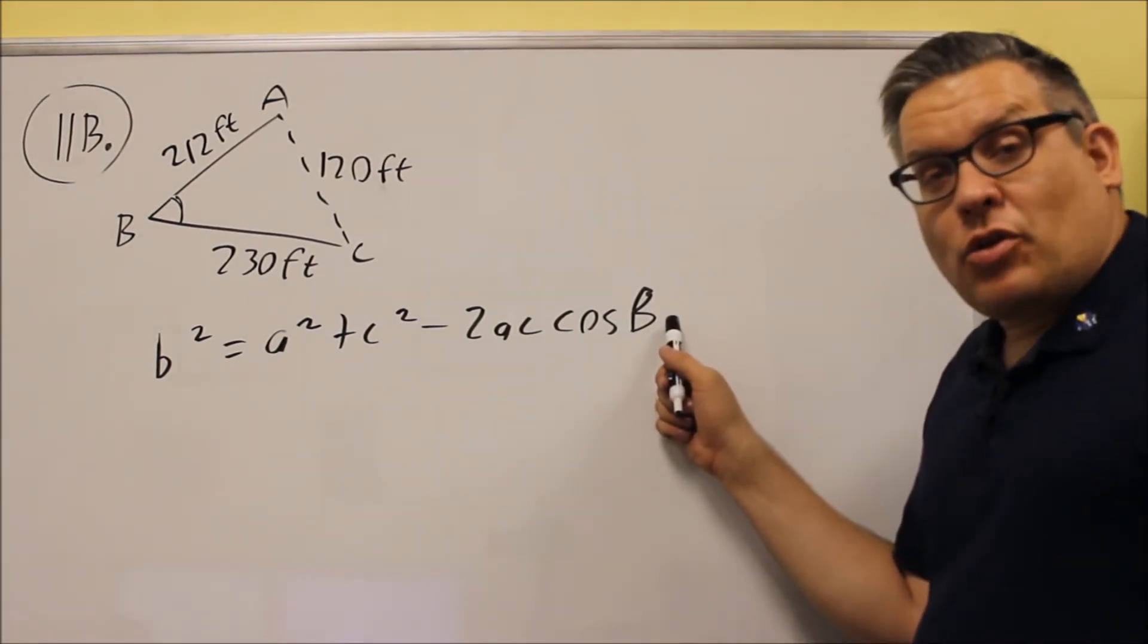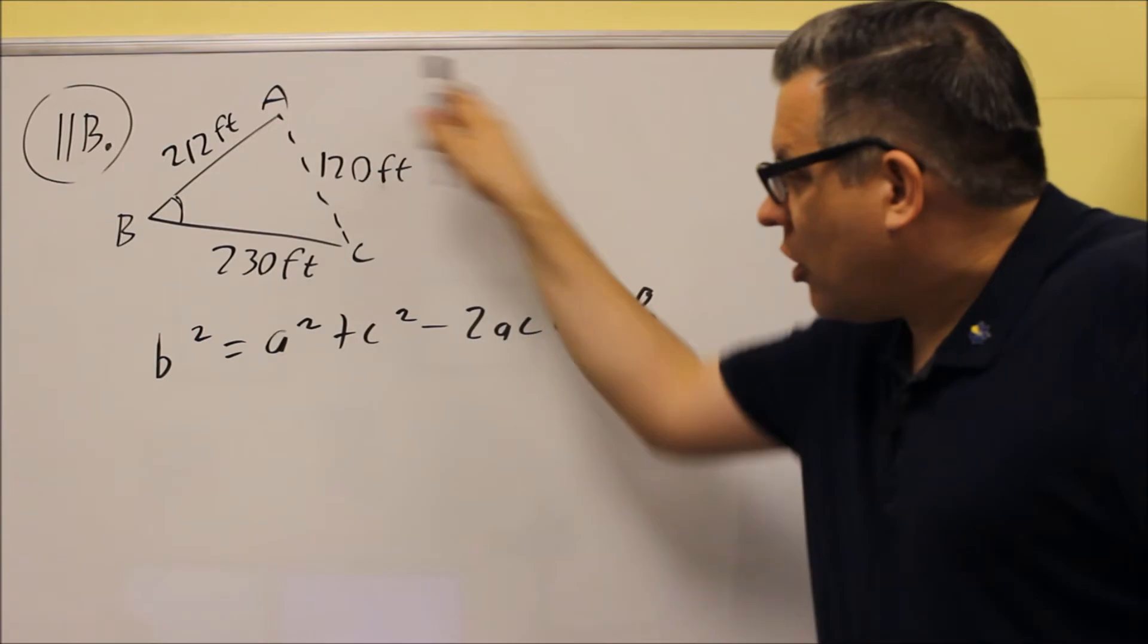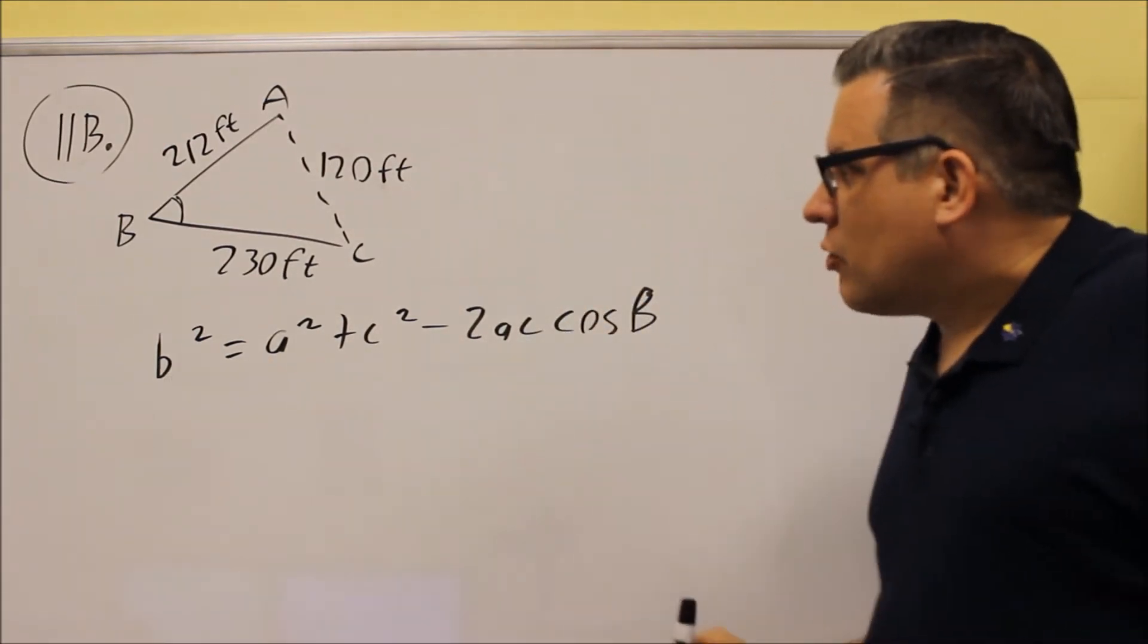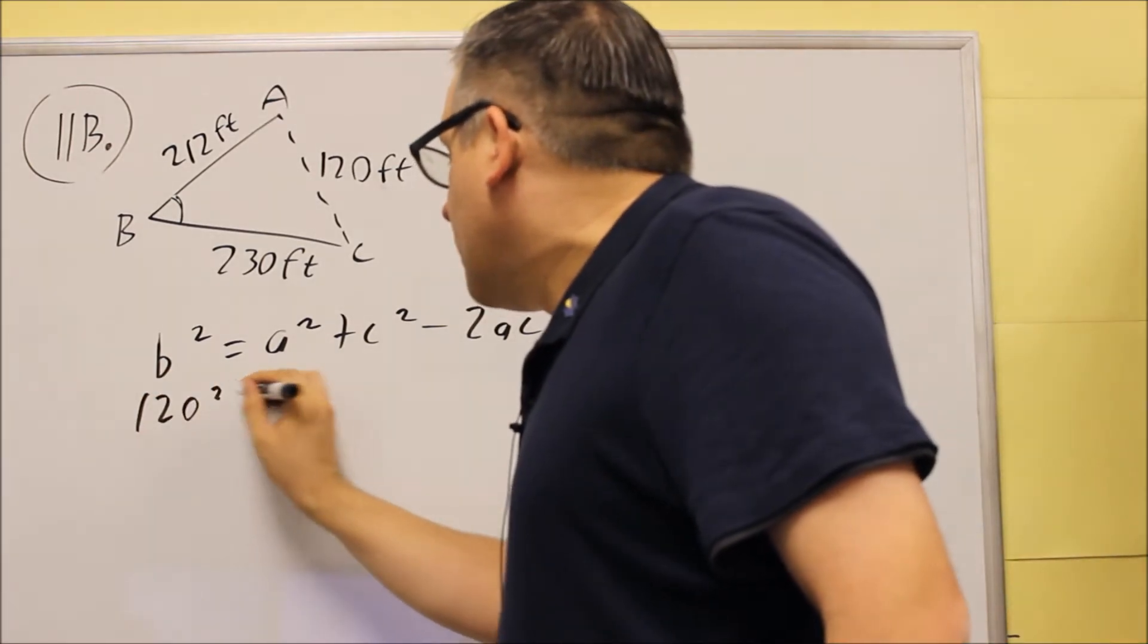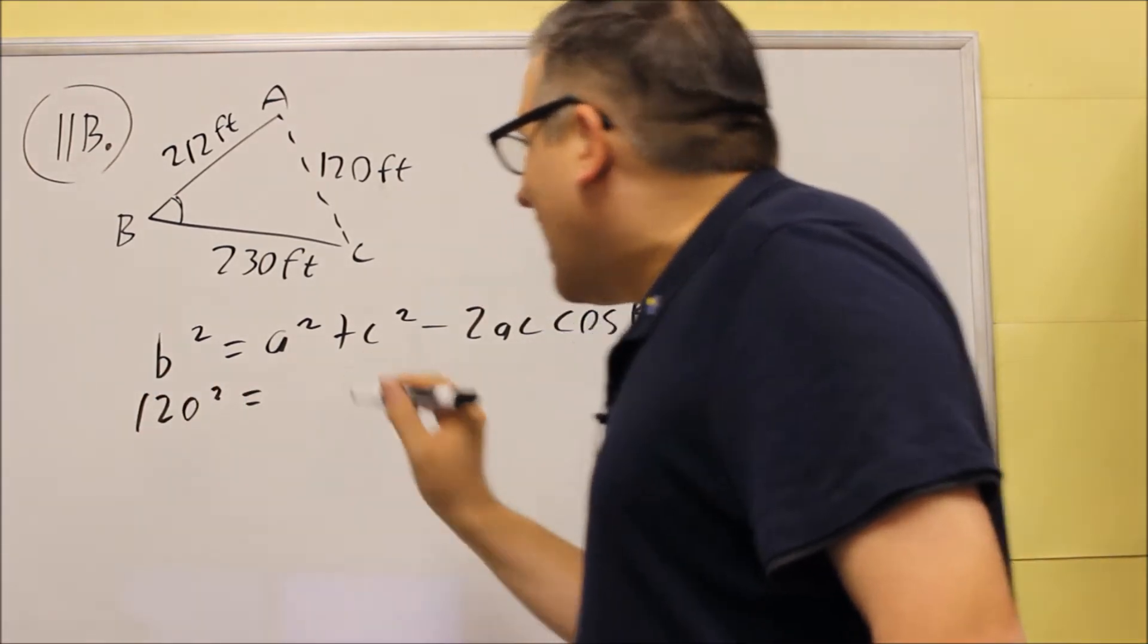So, I'm using this version in particular based on the way I have the triangle labeled. I'm solving for a capital letter B. So, this time I'm going to put in all the side, all the information. So, first, with B squared, the B is opposite angle B, so that would be 120 squared. And I have A, A is 230 squared,